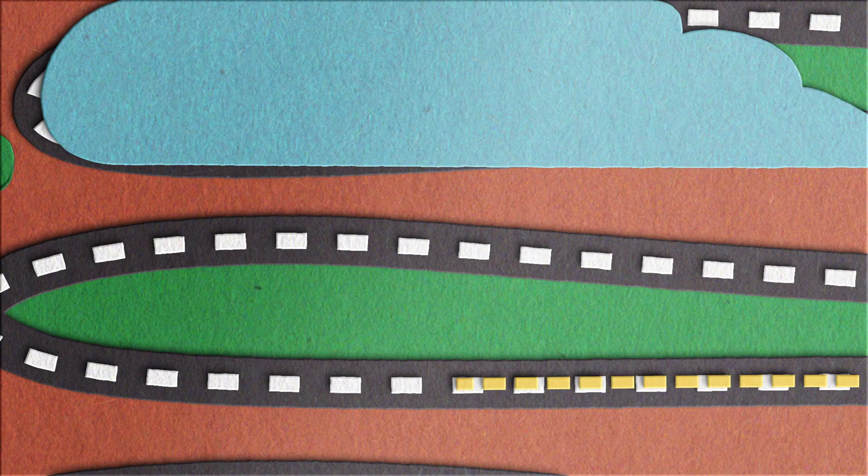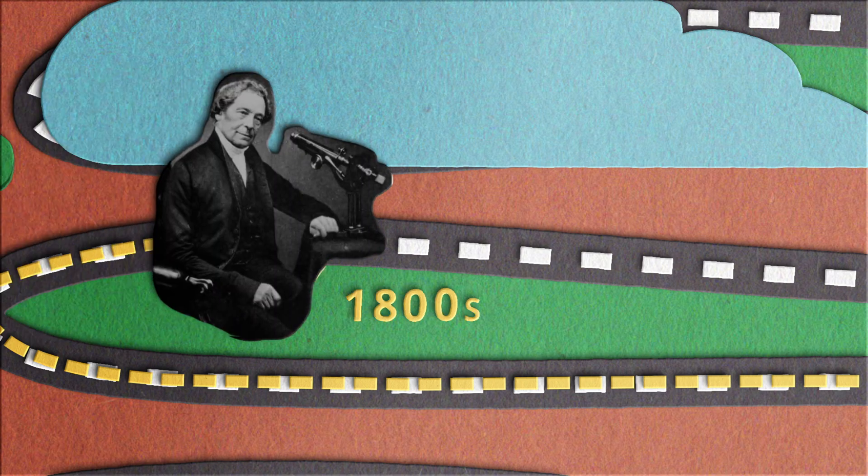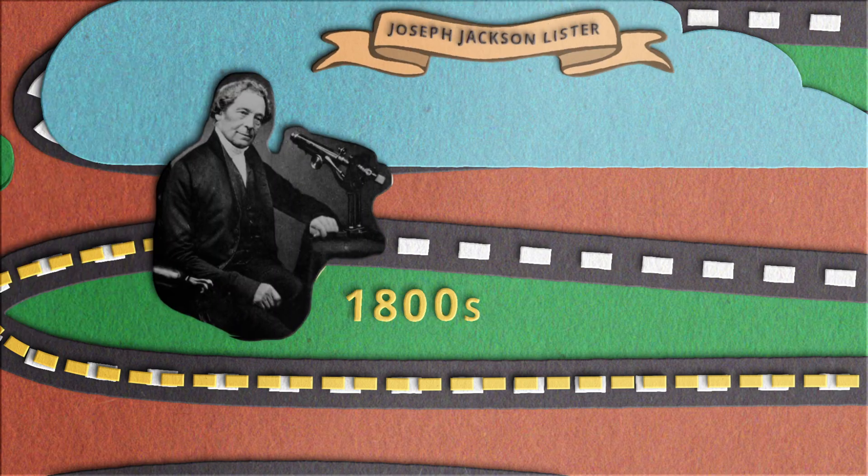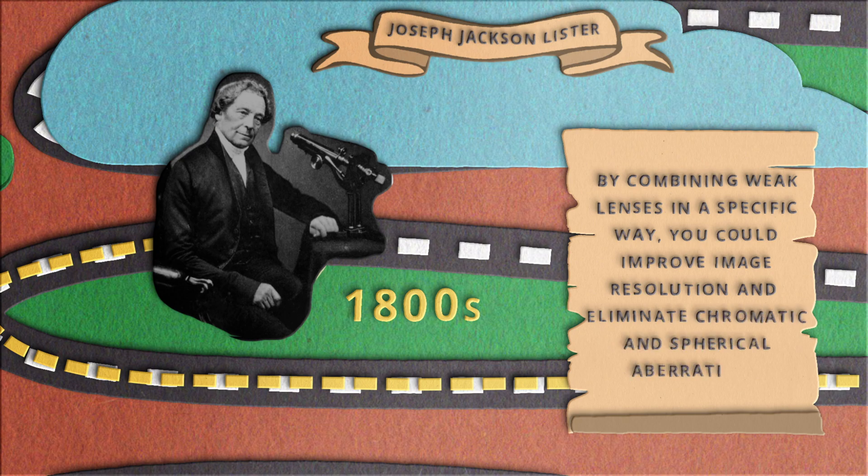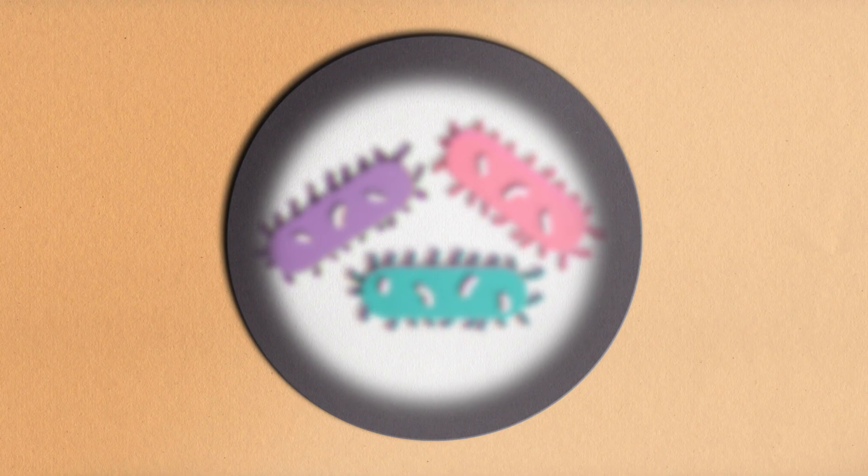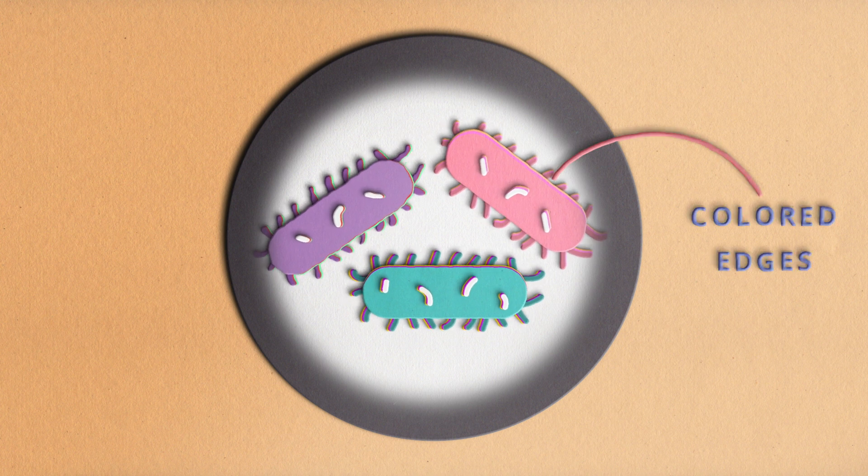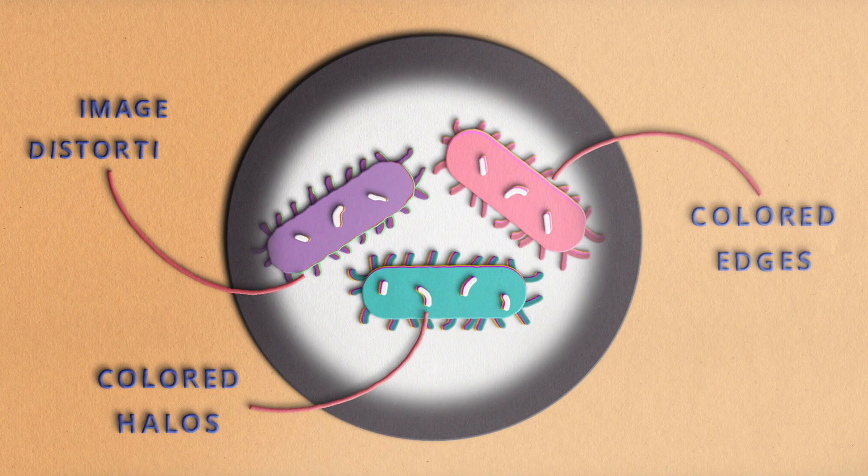Further advancements in microscopy were made in the 1800s. British physicist Joseph Jackson Lister discovered that by combining weak lenses in a specific way, you could improve image resolution and eliminate chromatic and spherical aberrations. What do I mean by chromatic and spherical aberrations? Well, at the time when you used a microscope, you would usually see colored edges on the cell, colored halos, and image distortions.